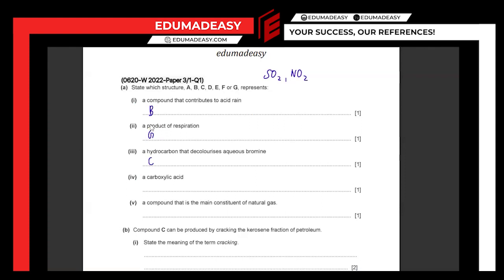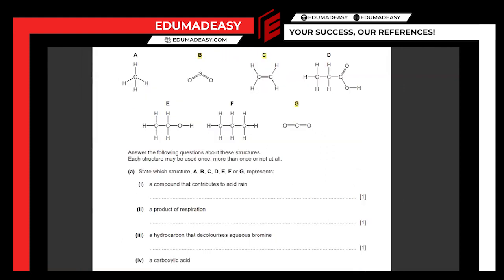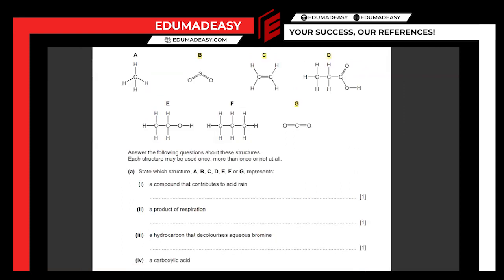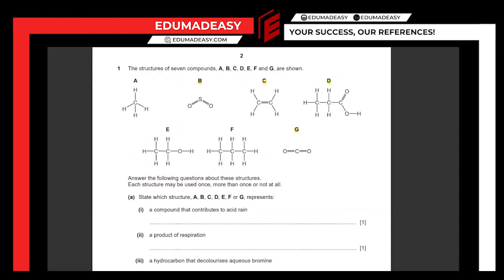Next is a carboxylic acid. You can identify it with the functional group COOH — a double bond between carbon and oxygen, with an OH group. You can clearly see that D is a carboxylic acid as it contains that COOH functional group. Next is a compound that is the main constituent of natural gas. Natural gas is methane, an alkane denoted by the formula CH₄, which you can see clearly in A.